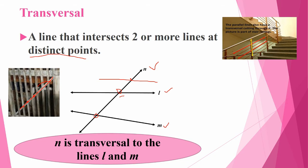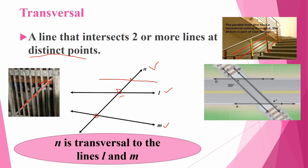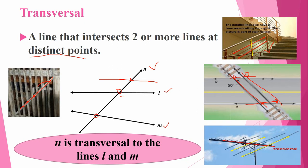See this is also an example for transversal. Here on the road, a railway track is crossing. So here two lines are there — this is one line and this is one line. This track is crossing, giving one point of intersection here and another point of intersection here. See the antenna also — some more lines, and this line crosses them giving points of intersection. So transversal means the line that intersects two or more lines at distinct points.